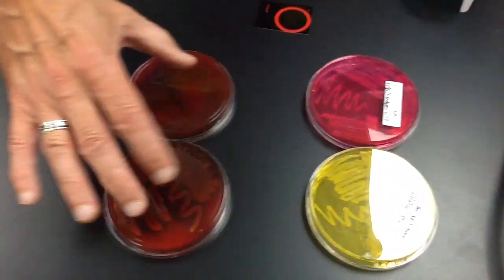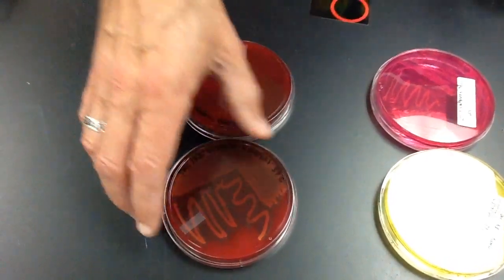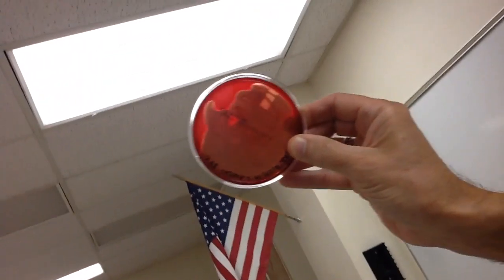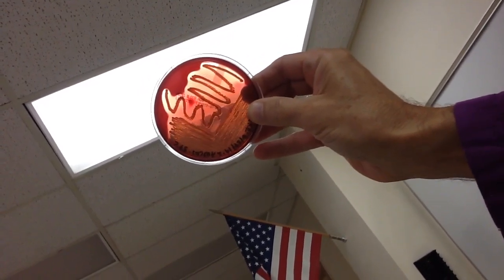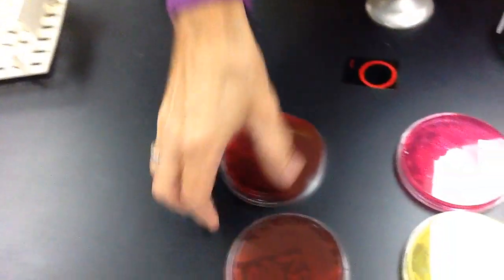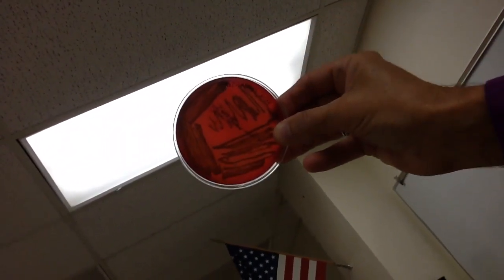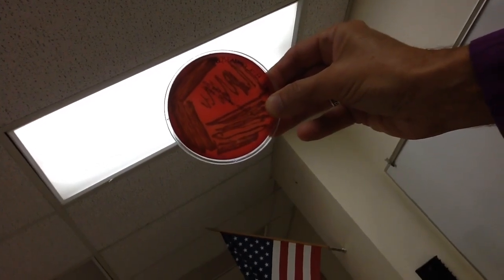Now, for the blood agar plates over here, what we're looking for is hemolysis. So in the case of complete hemolysis, you actually will clear out the blood agar, and you can see that there's clearing all around the bacteria on that. So that's beta hemolysis, so that's complete. And when we look at the alpha hemolysis, you can see a greenish color that shows up there, and a little lightening around some of the colonies on that.